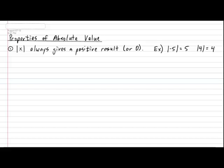Here's the second property. The second property is also kind of obvious, and states that the absolute value of a number will always equal the absolute value of the opposite of that number. Here's a quick example: suppose I ask you, what is the absolute value of 6? This property says that this will also equal the absolute value of negative 6. The result of both of those is positive 6, because both 6 and negative 6 are 6 units away from 0.